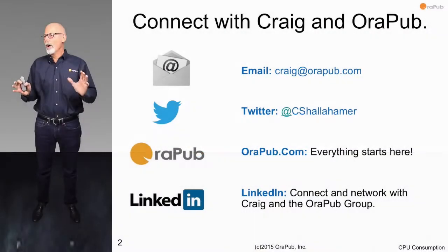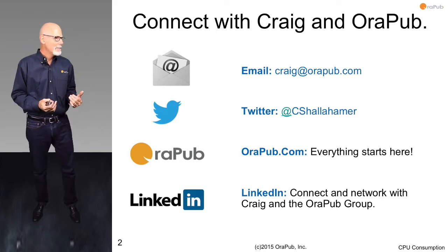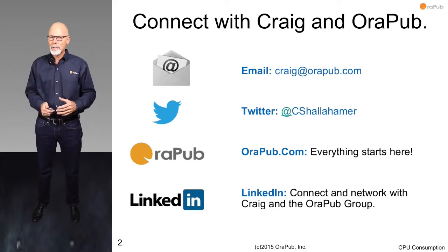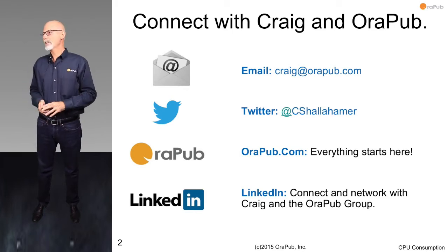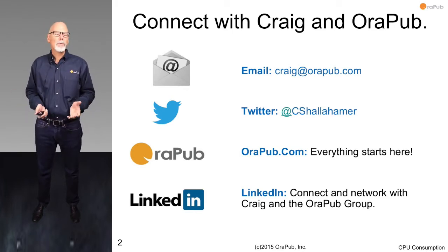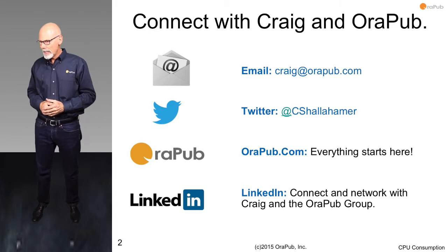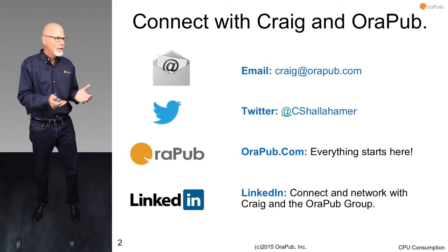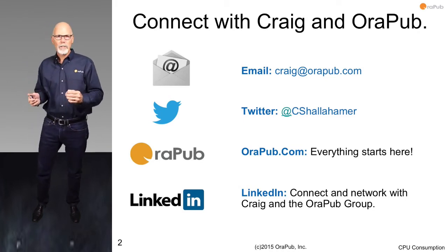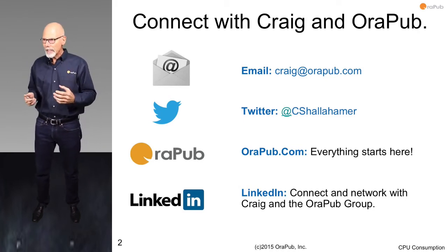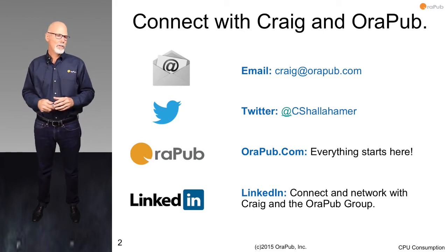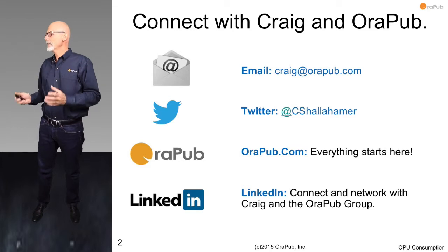First, I want you to know how to get a hold of me and connect with me, because usually there are quite a few questions and inquiries after this presentation. There are a number of ways you can contact me. Probably the best way is simply to email me at craig@orpub.com. Another way is to follow me on Twitter. In terms of getting resources, orpub.com is the best place to start.